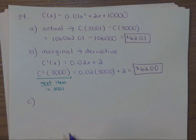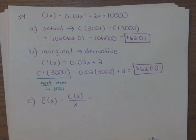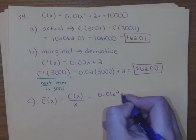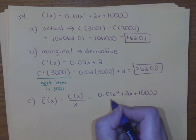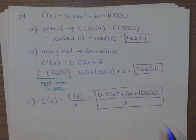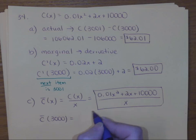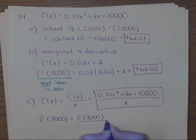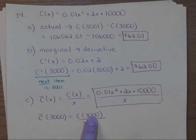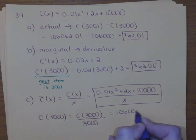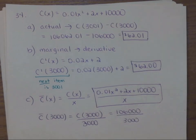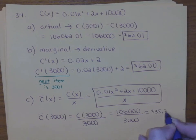For part c, find the average cost function — remember that is c-bar, and the formula is cost over x. So put the cost function over x; that's your average cost. Plugging in 3,000: we already know c of 3,000 is $106,000, so the average cost is 106,000 over 3,000, which works out to about $35.33 per unit.